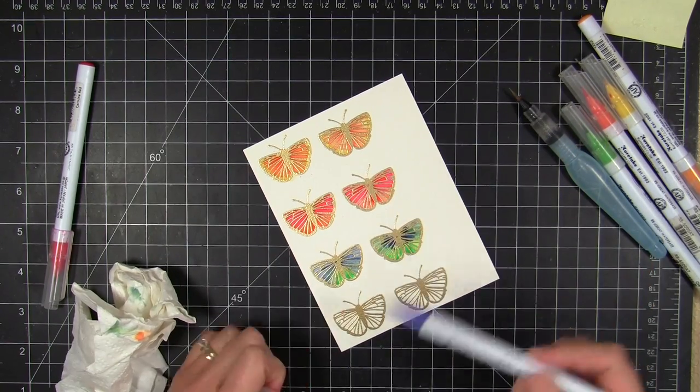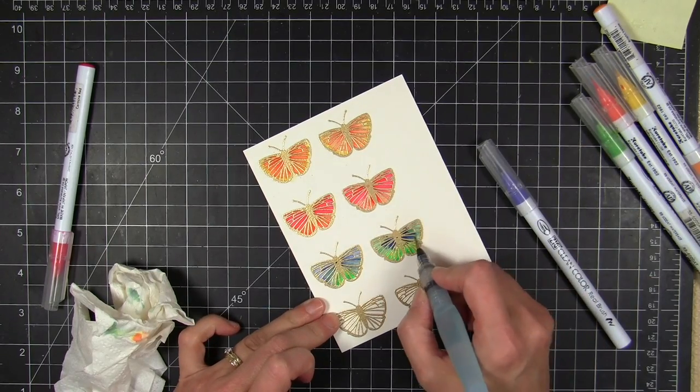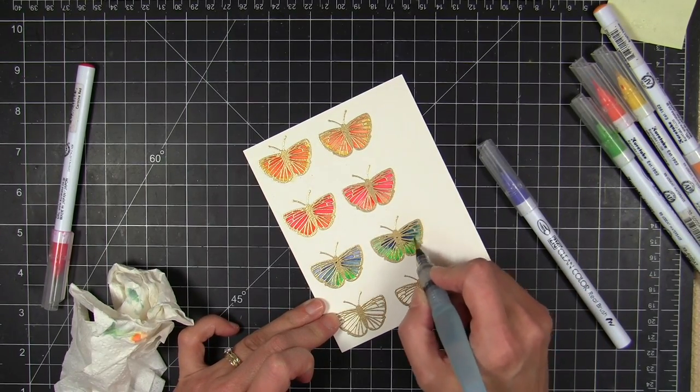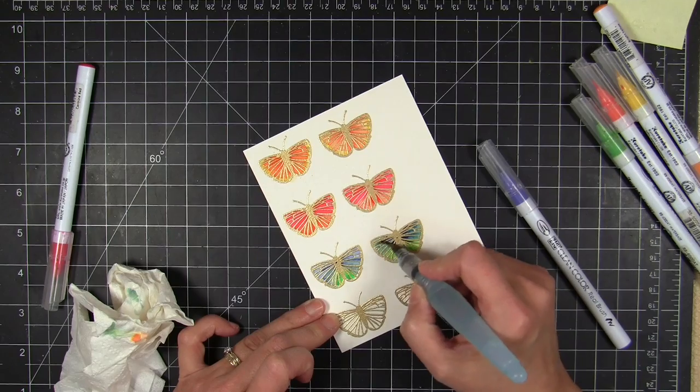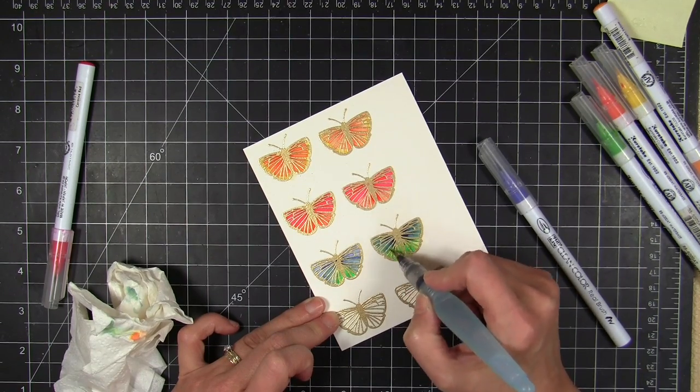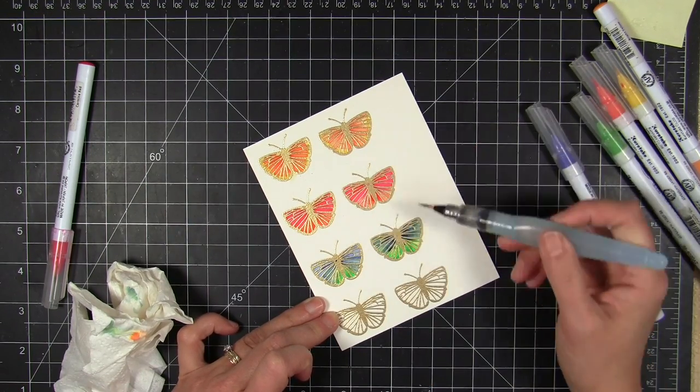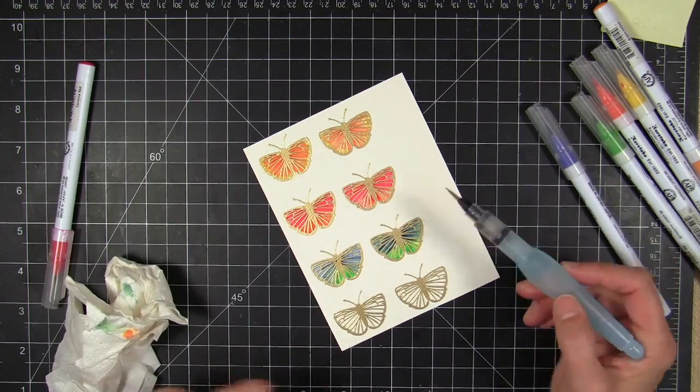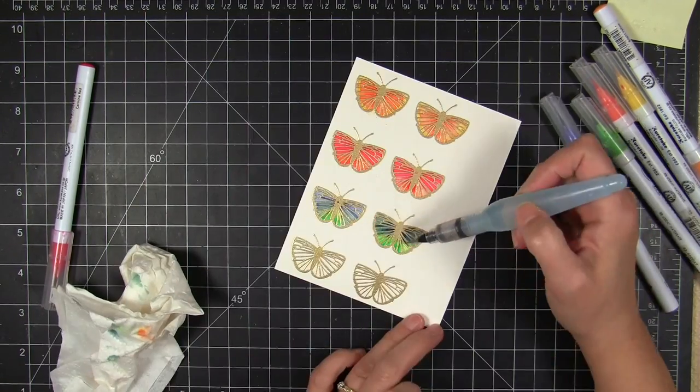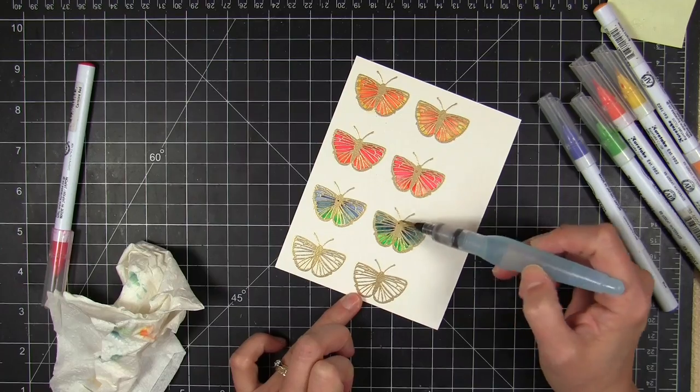And lifted off any of the ink that might have been sitting on the embossing lines, the gold embossing lines there, so that I'd have a nice clean finish. And I wouldn't accidentally smear any ink that was sitting on top of the embossed line. So I'm just gonna quickly finish up here and then I'm gonna go over to my Big Shot.